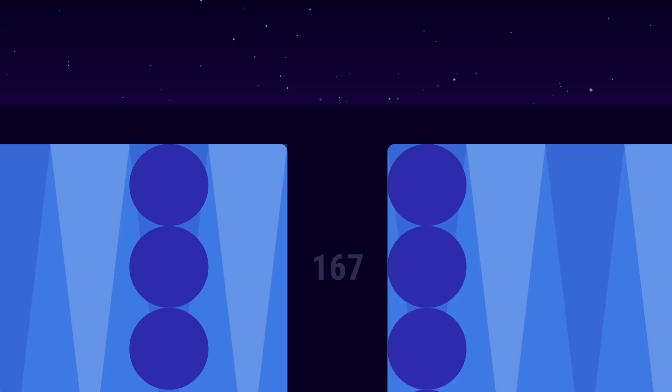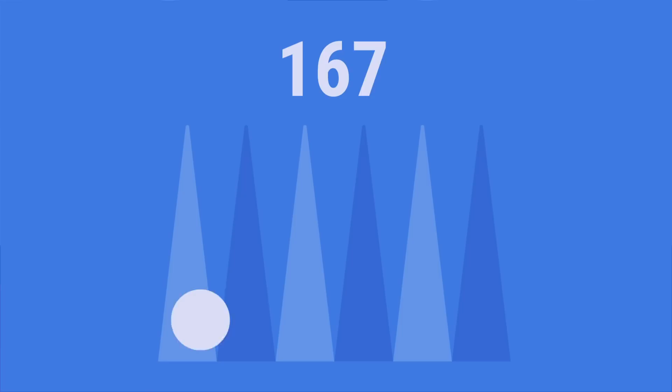Section 7. Pip Count. In the beginning of the game, both players have 167 pips. Pips is the number of points you need to move your checkers in order to bear off all of them.